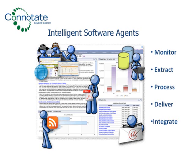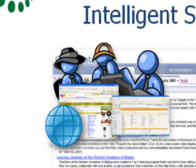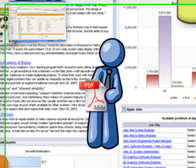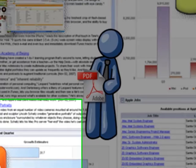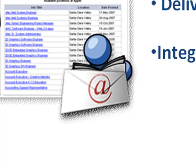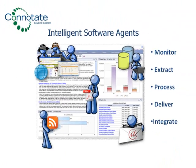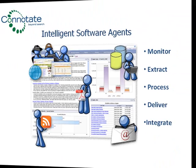These include web and enterprise sources, PDFs, RSS feeds, email, and databases. Agents can also be built to spider web sources on your behalf. Let's look at some of the agent types available through the Connitate solution.